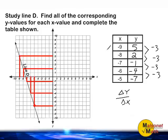When examining the x-values, we go from negative 9 to negative 8, which is an increase of 1. Negative 8 to negative 7 is an increase of 1. From negative 7 to negative 6 is an increase of 1 as well, as is from negative 6 to negative 5.